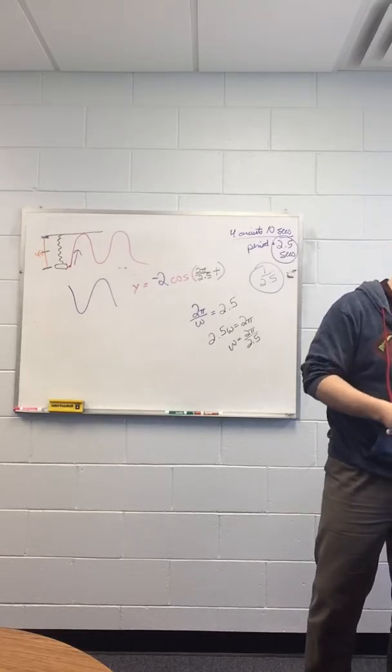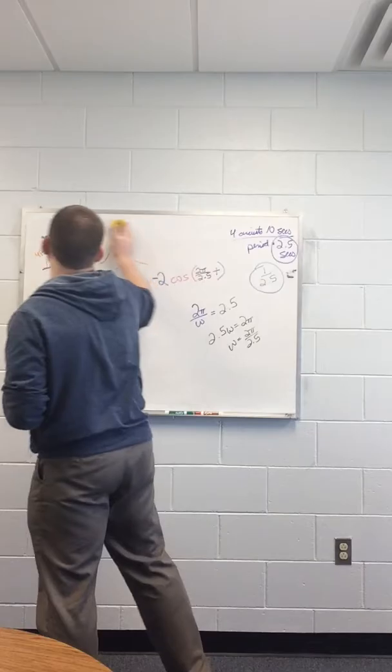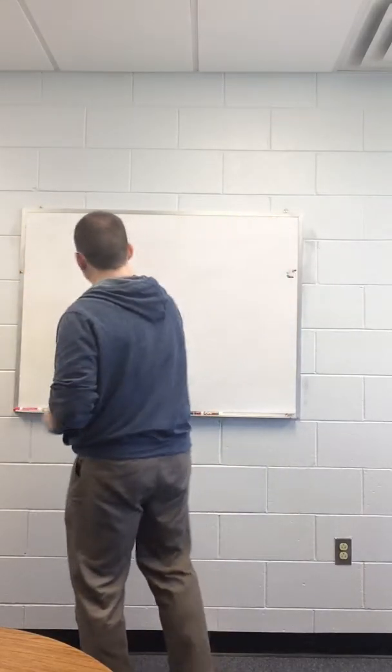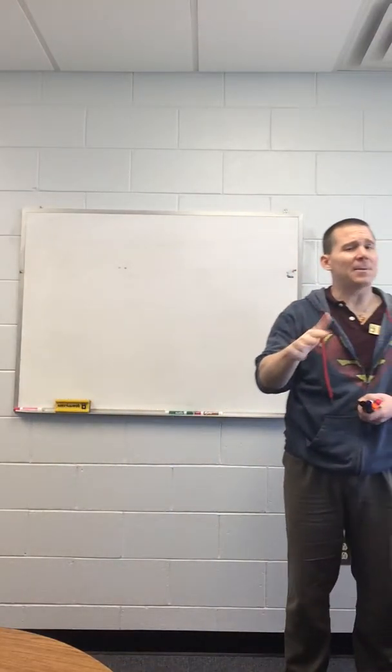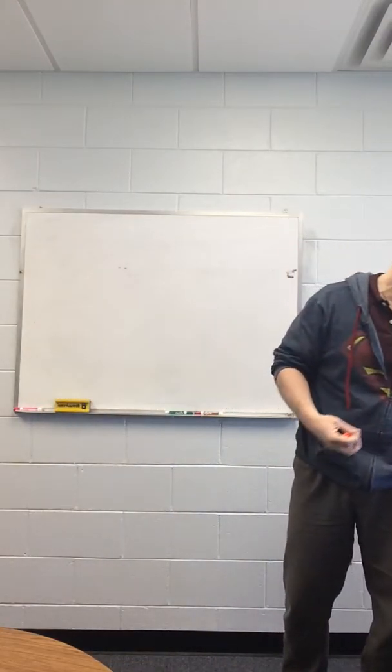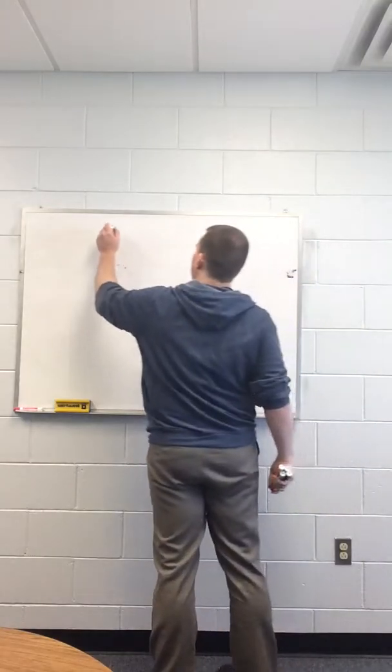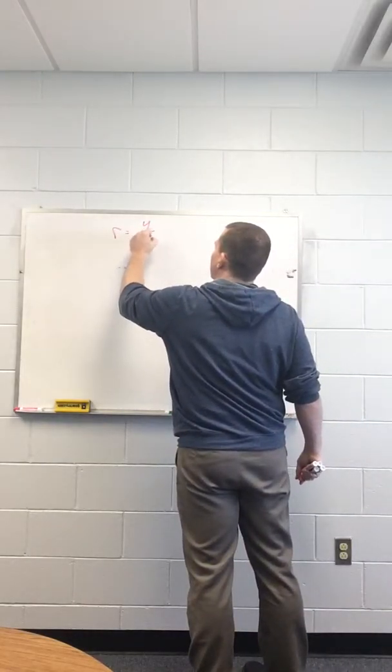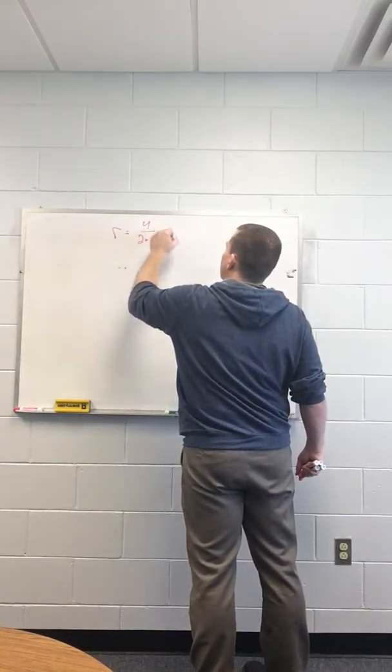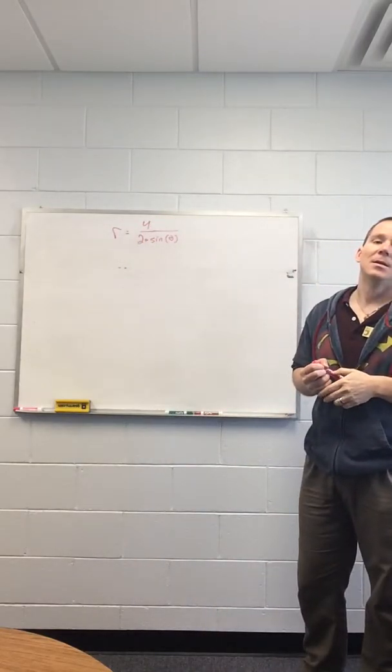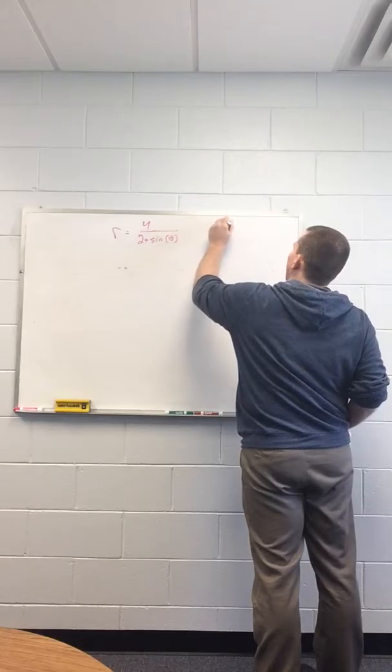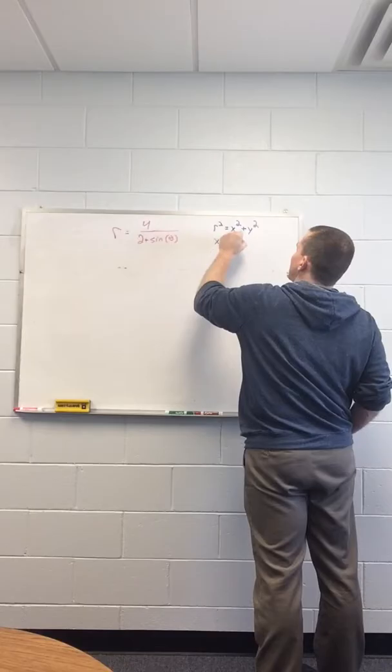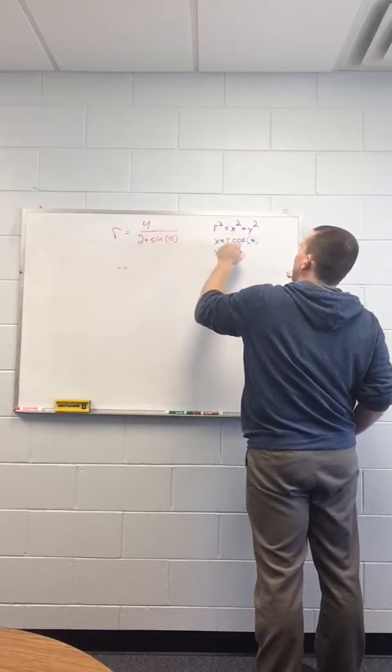This last one right here with polar coordinates. Again, I mentioned in the last video, there were several with polar conversions on the exam. And for the most part, people did well beyond a few algebra mistakes. So we're just going over a couple of these. So we have R equals 4 over 2 plus sine theta. And we want to convert that. We had mentioned before, we have our conversions. R squared equals x squared plus y squared. And x equals R cosine theta. Y equals R sine theta.